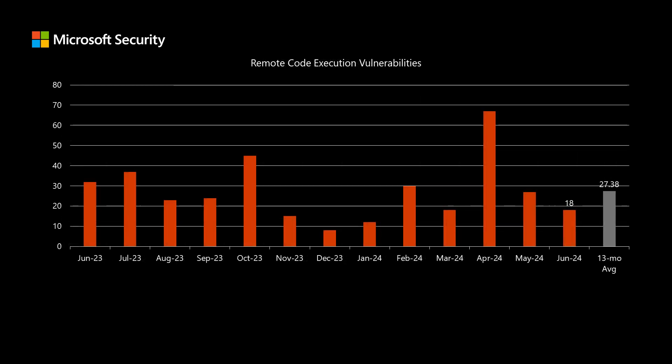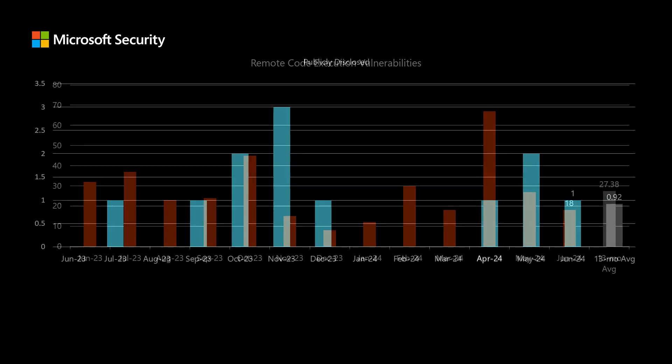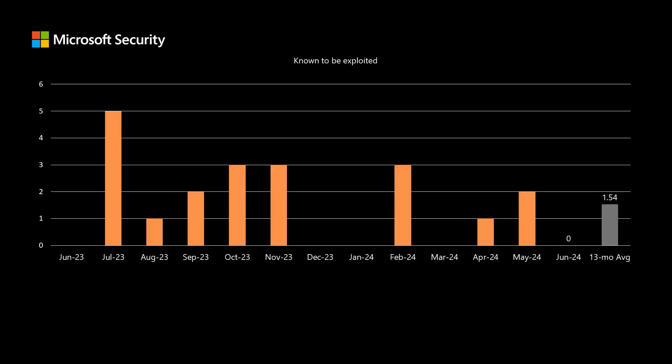Next, we'll talk about remote code execution vulnerabilities. These are the type of vulnerabilities that typically provide the most risk. They would allow a threat actor to install malicious software or other nefarious deeds. This month, we have 18 remote code execution vulnerabilities in the release, and that's quite a bit lower than our average of just over 27 of these types of vulnerabilities for the past 13 months. There's one vulnerability that is publicly disclosed — we've been averaging just under one. And finally, there are no vulnerabilities that are known to be exploited at the time of release, and we've been averaging just around one and a half over the past 13 months.